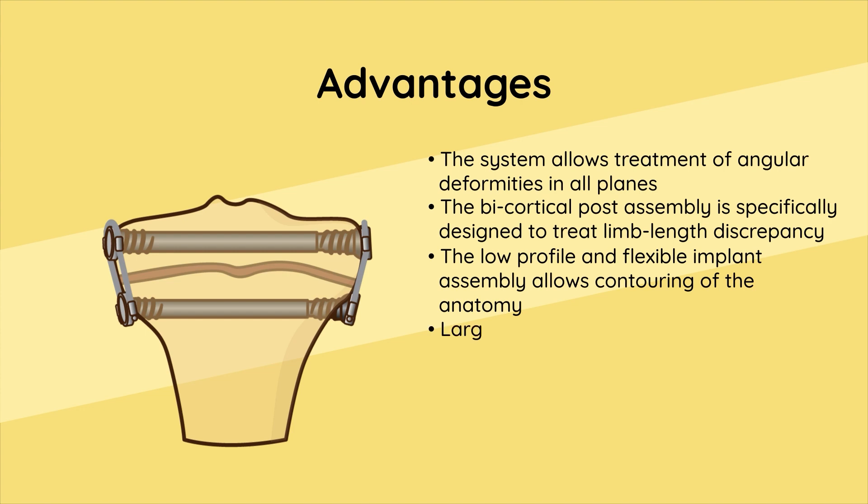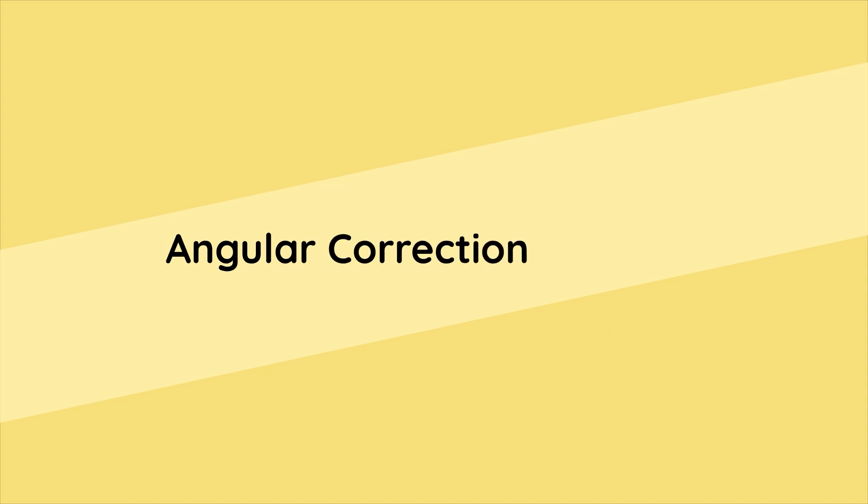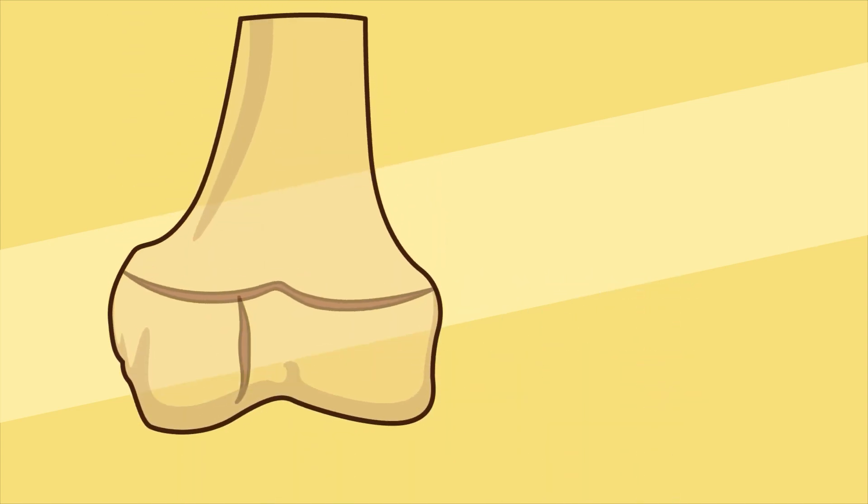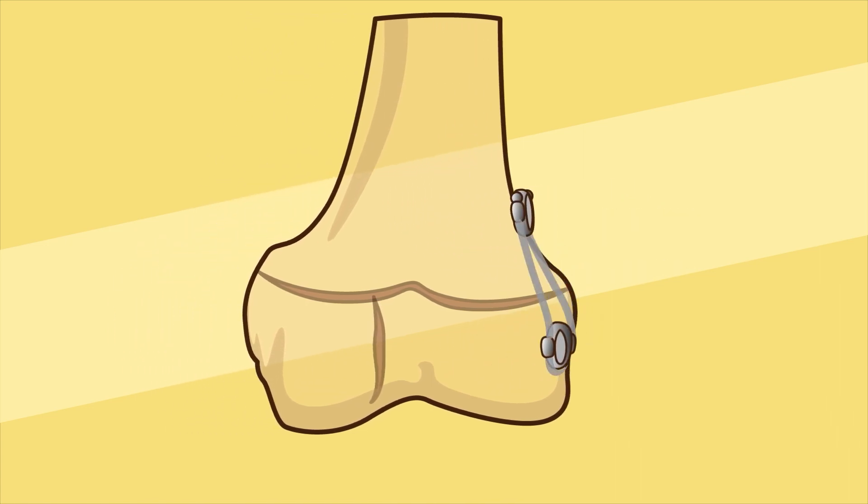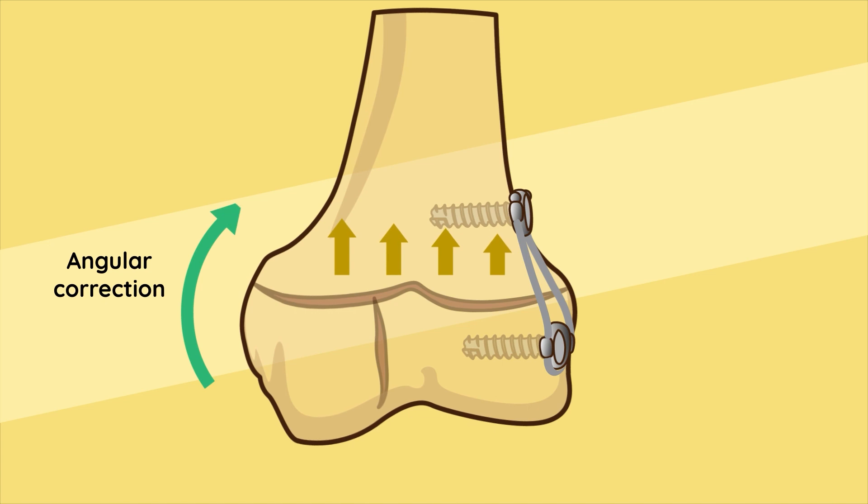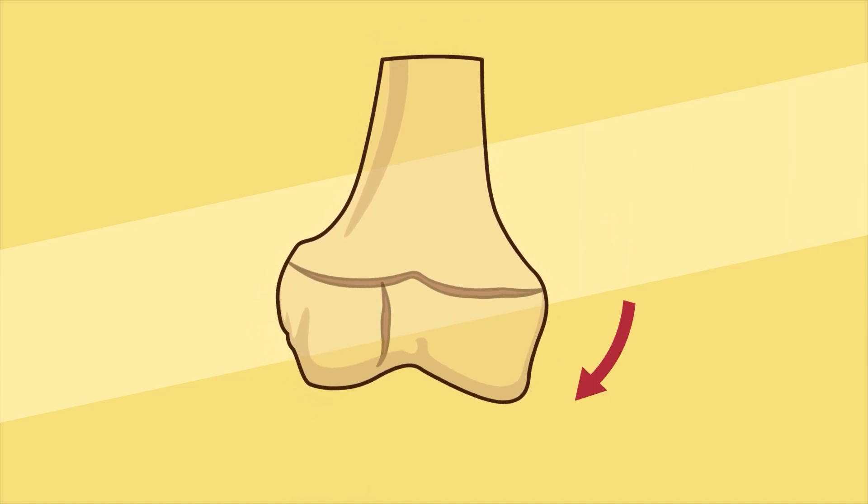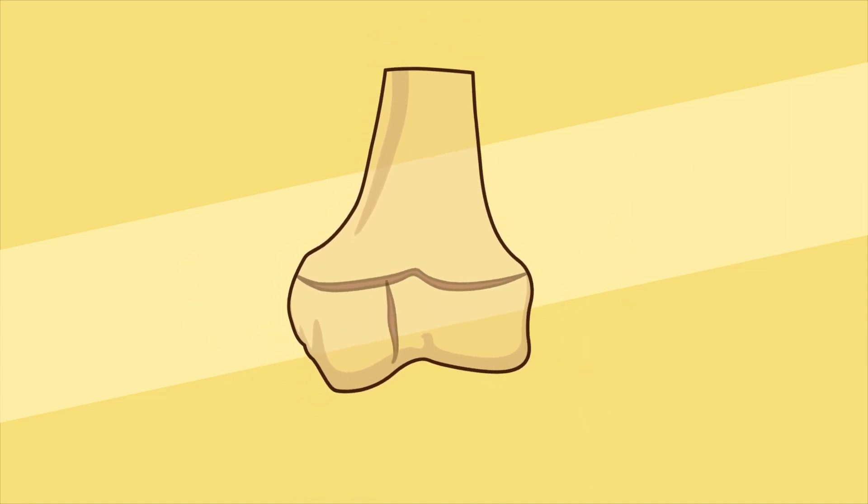Angular correction principle: This procedure, also referred to as temporary epiphysiodesis or tension band plating, consists of placing a gyro on one side of the bone spanning the growth plate. As growth occurs, the implant prevents growth at the implantation site while allowing growth on the opposite side. This has the effect of modulating growth to correct varus and valgus deformities.